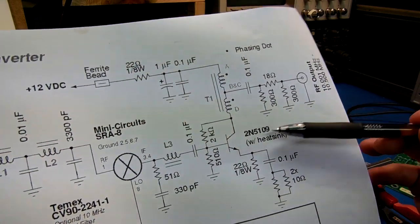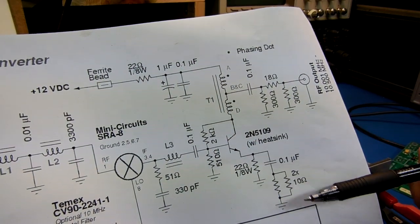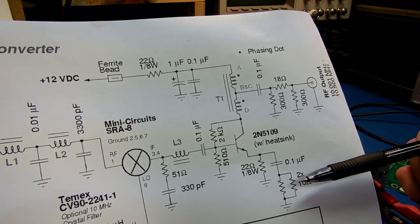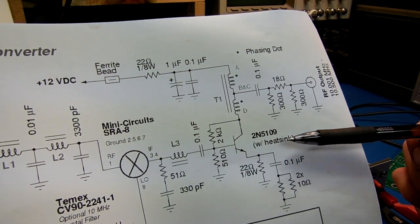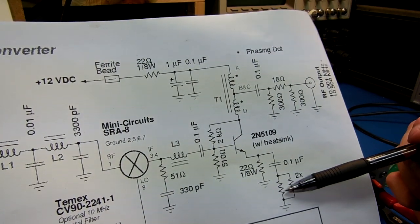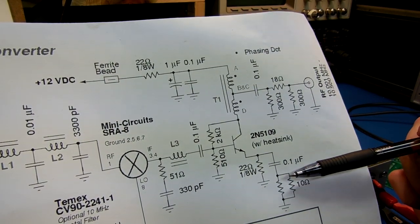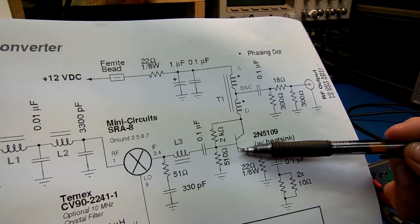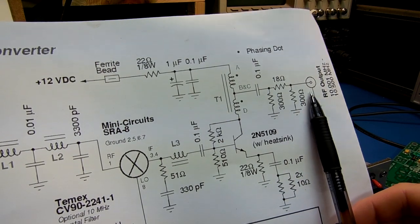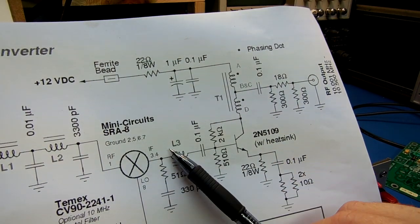The IF amplifier itself is a 2N5109 with a heatsink, with a fairly high current. And the standard emitter degeneration. But this kind of stabilizes the gain, and the feedback helps to transform the output impedance to the input of the amplifier itself.